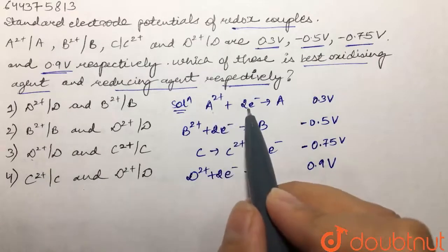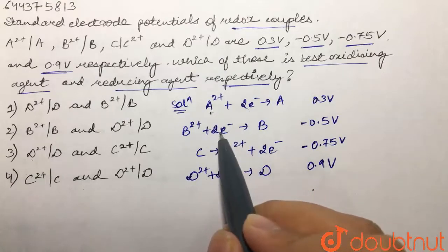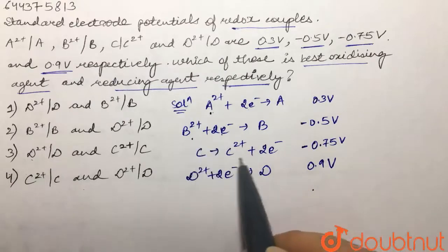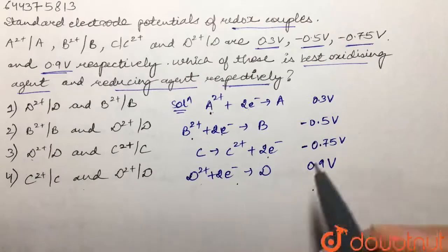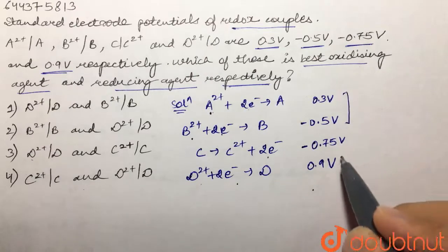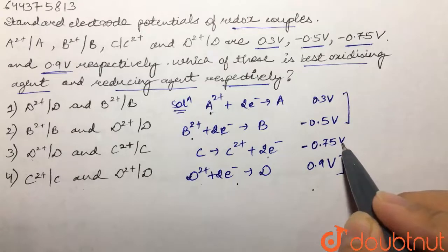This is gain of electron, so this is reduction. This is also reduction gain of electron. This is oxidation and this is also reduction. That means these are reduction potentials given to us, whereas this is the oxidation potential.